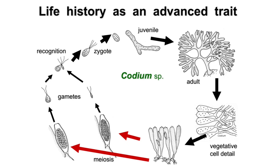Now let's take an example from the plant kingdom — let's talk about Codium, which is an alga. Starting with the zygote, which is diploid, it grows through the process of mitosis, producing a juvenile and then an adult plant. The adult plant has special sexual structures where gametes form through the process of meiosis, because genetic recombination happens here, and all gametes are genetically unique, with a reduction in the number of chromosomes — so these are haploid gametes.